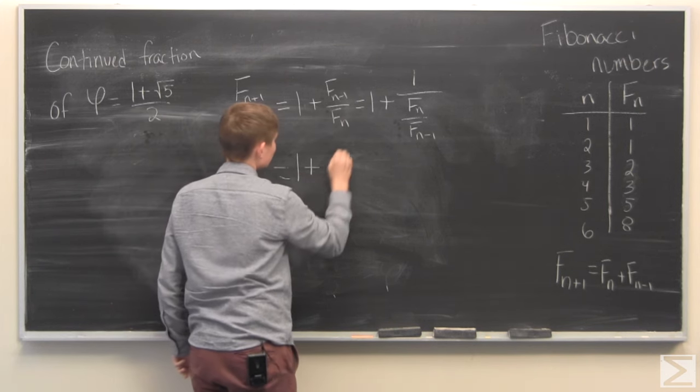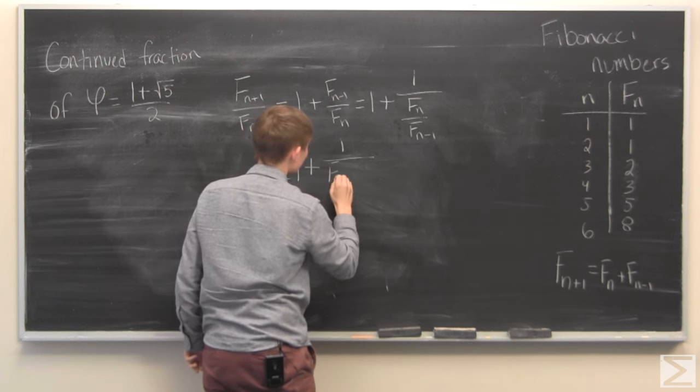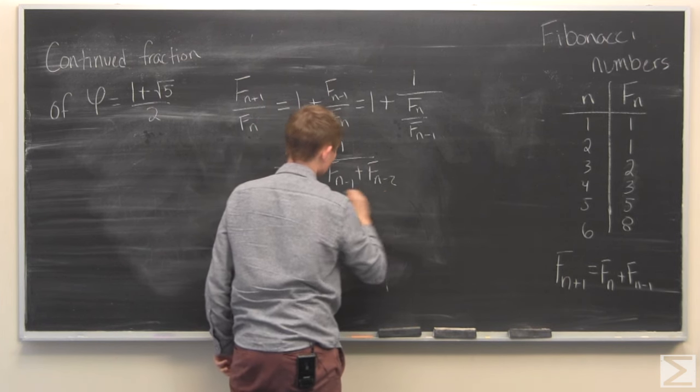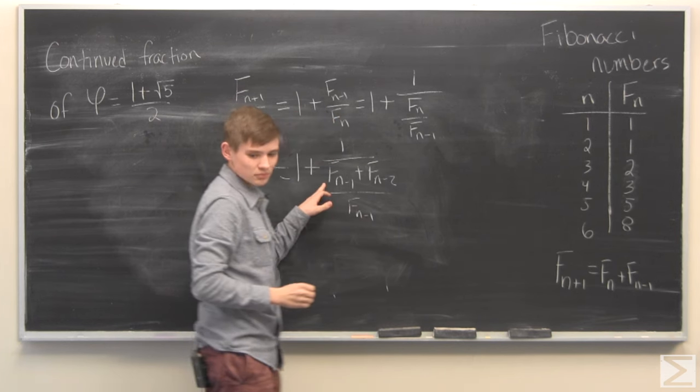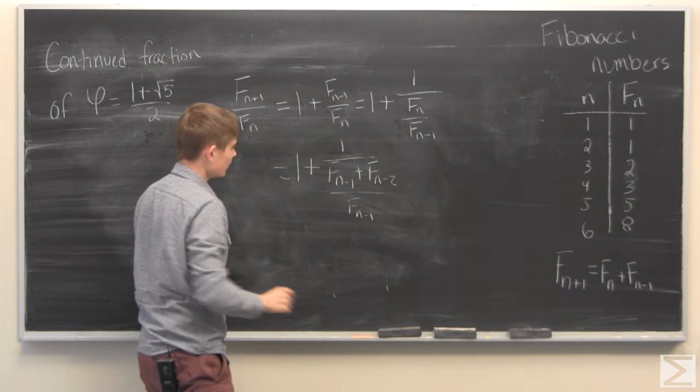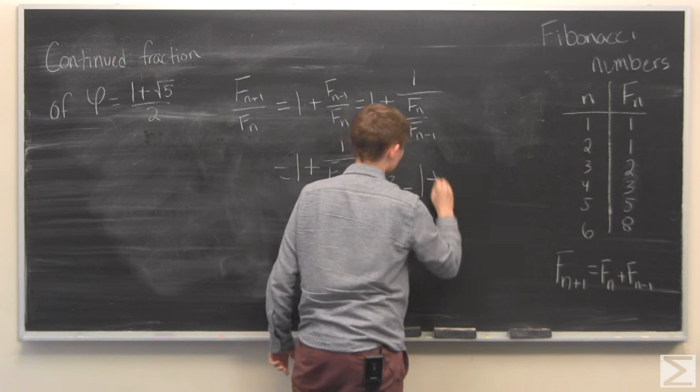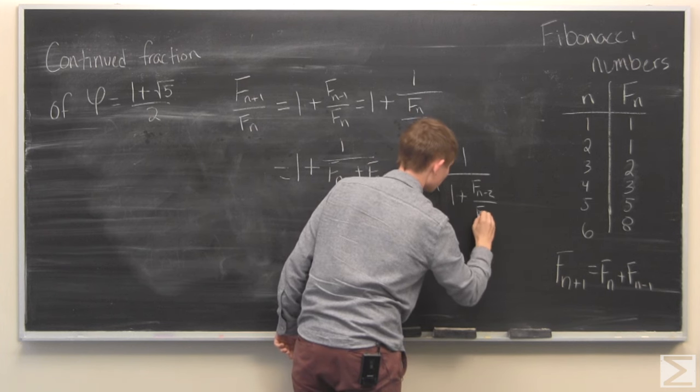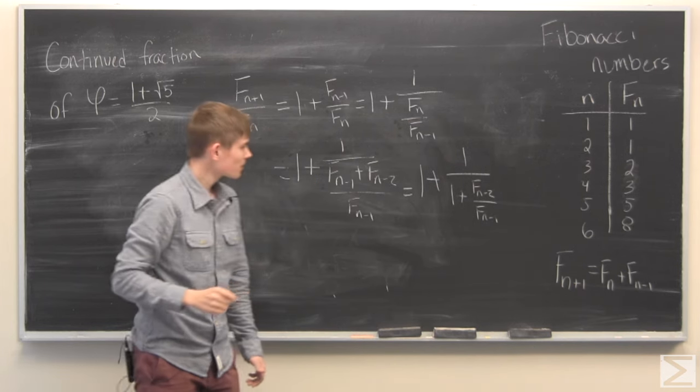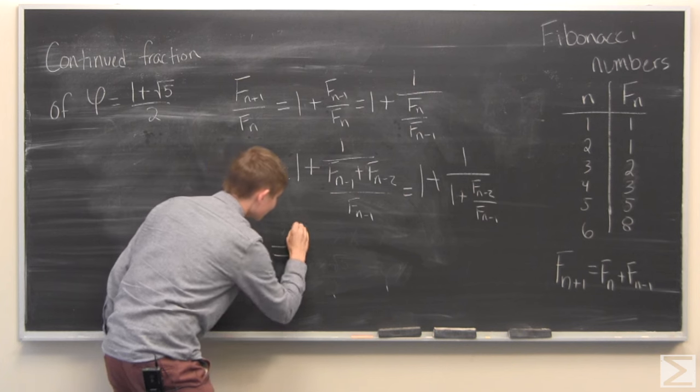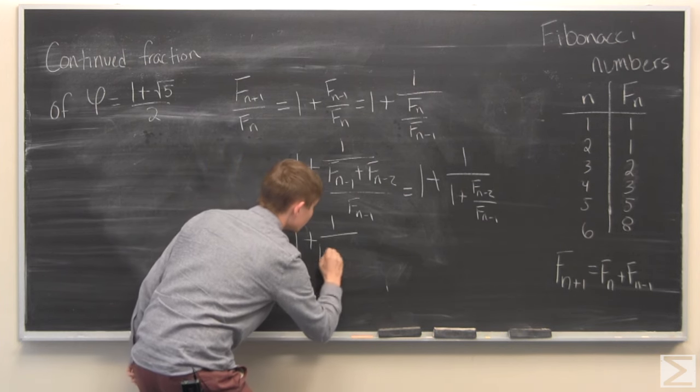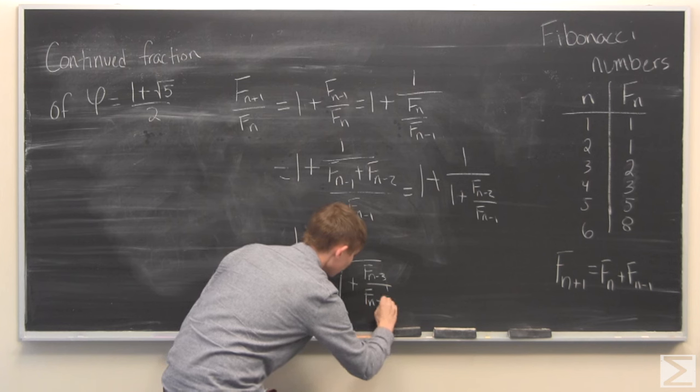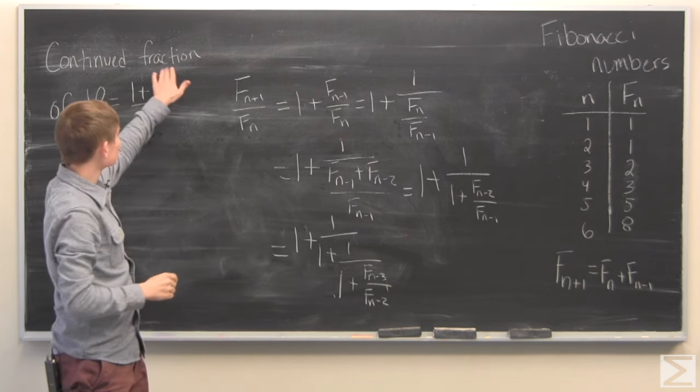Now this is equal to f of n minus 1 plus Fibonacci numbers, using the basic property of Fibonacci numbers. We can keep going with this. We get 1 plus 1 over 1 plus this ratio. From here, we can keep going. What's happening is that these are going to keep continuing down, which is where we get the continued fraction.